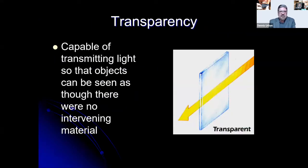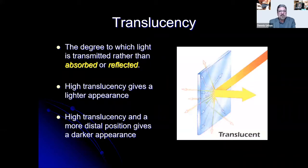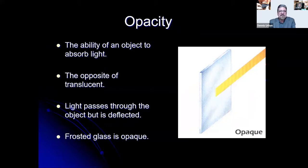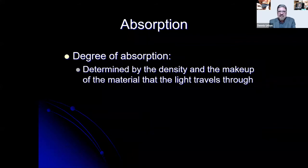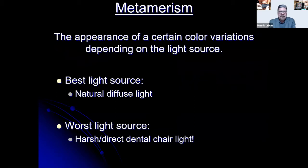Transparency is the capability of transmitting light so objects can be seen through the material. Translucency — like an incisal edge — is the degree to which light is transmitted rather than absorbed or reflected; high translucency gives a lighter appearance in a facial position and darker in a distal position. Opacity is the ability to absorb light, the opposite of translucency — frosted glass is opaque. Metamorism is the appearance of color variation depending on the light source; the best is natural diffused light, the worst is harsh direct dental chair light.